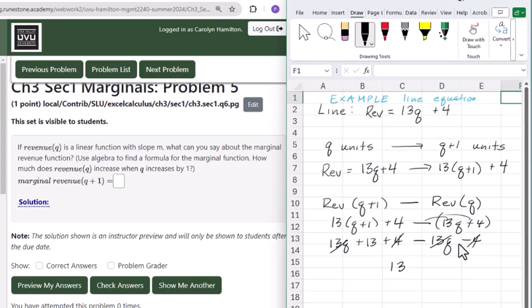Which, not coincidentally, is the slope, because we know that the marginal is the slope. So our slope of 13 turns out to be our marginal value.